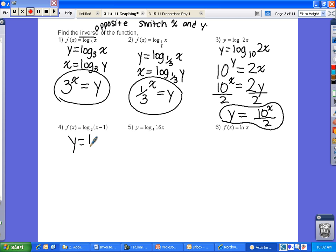Going on to number 4, y equals log base 2 of x minus 1. Switch x and y, x equals log base 2 of y minus 1. Use your definition of log to exponent. So 2 to the power of x equals y minus 1. Now I have to get rid of that minus 1, so I'm going to add 1 to both sides. That gives me 2 to the power of x plus 1 equals y.